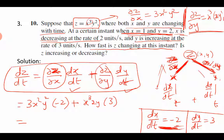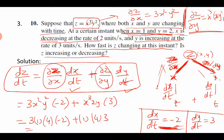Substituting x = 1, y = 2, dx/dt = −2, dy/dt = 3: dZ/dt = 3(1)²(2)²(−2) + 2(1)³(2)(3) = 3(1)(4)(−2) + 2(1)(2)(3) = −24 + 12 = −12 units per second. Since the answer is negative, Z is decreasing at 12 units per second.